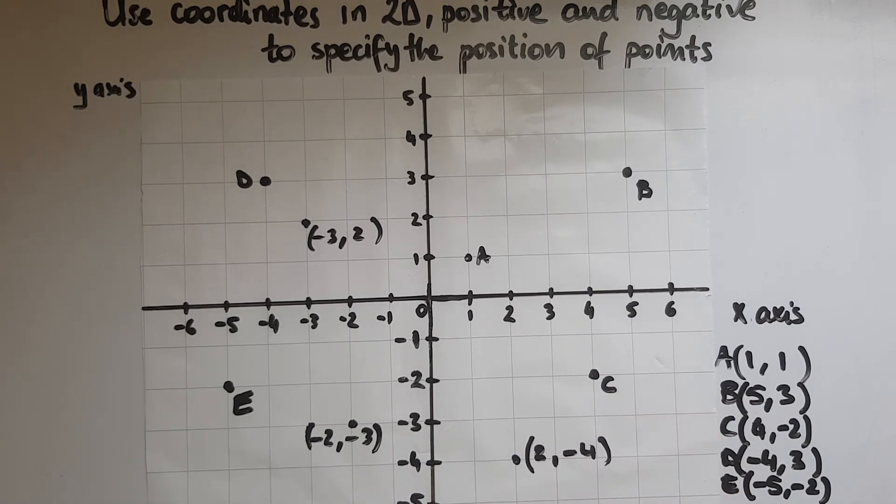This is how you use coordinates in 2D, positive and negative, to specify the position of points.